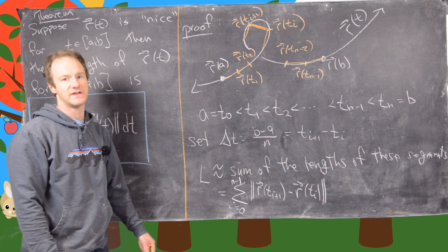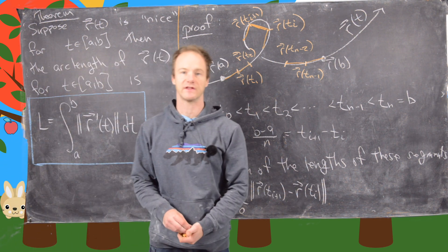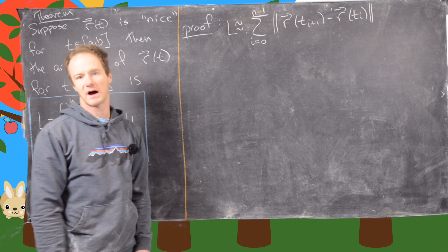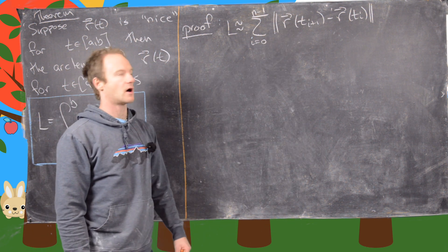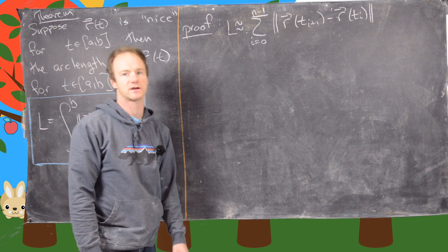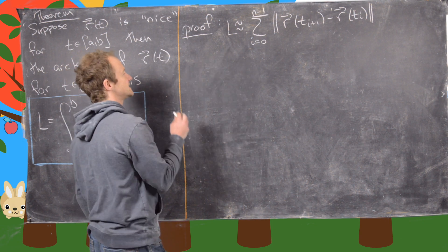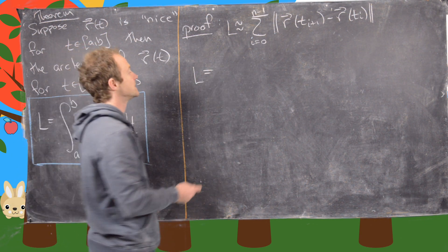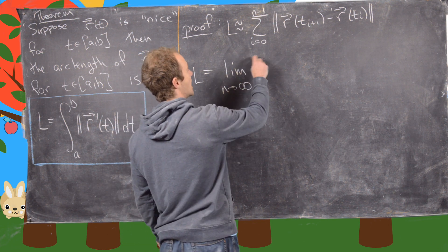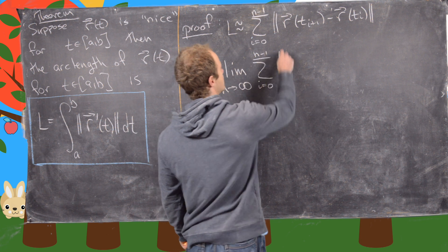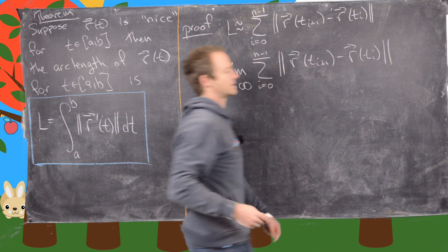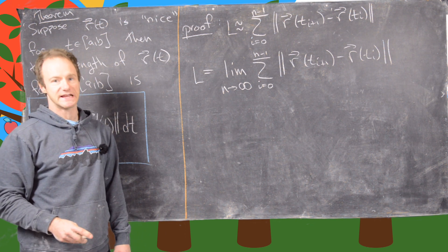The actual arc length will be the limit of this approximation as n goes to infinity. So we have the limit as n goes to infinity of the sum from i equals zero to n minus one of the magnitude of r of t_{i+1} minus r of t_i. The next thing we want to use is the Mean Value Theorem. We haven't proven the MVT for vector-valued functions, but there is a version of it for vector-valued functions which I'll let you look up.